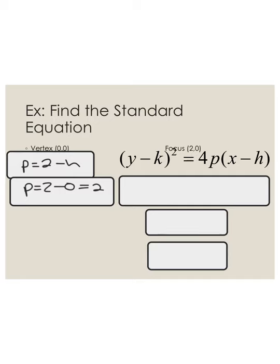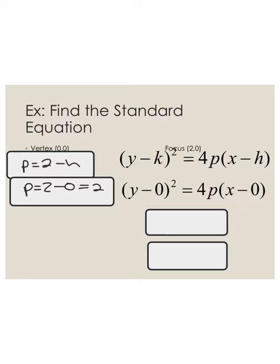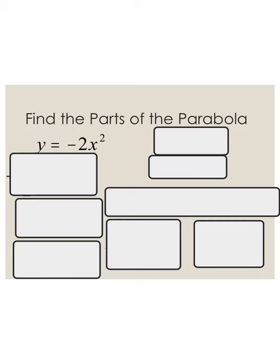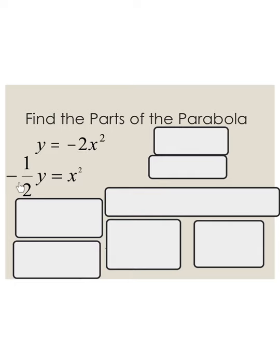Plugging in h, k, and p, I get (y − 0)² = 4p(x − 0), which simplifies to y² = 4px, and then y² = 8x. For the next example, we need to identify p from a given equation. Moving terms and dividing gives −(1/2)y = x². Since this expression equals 4p, I set 4p = −1/2, divide both sides by 4, and get p = −1/8.